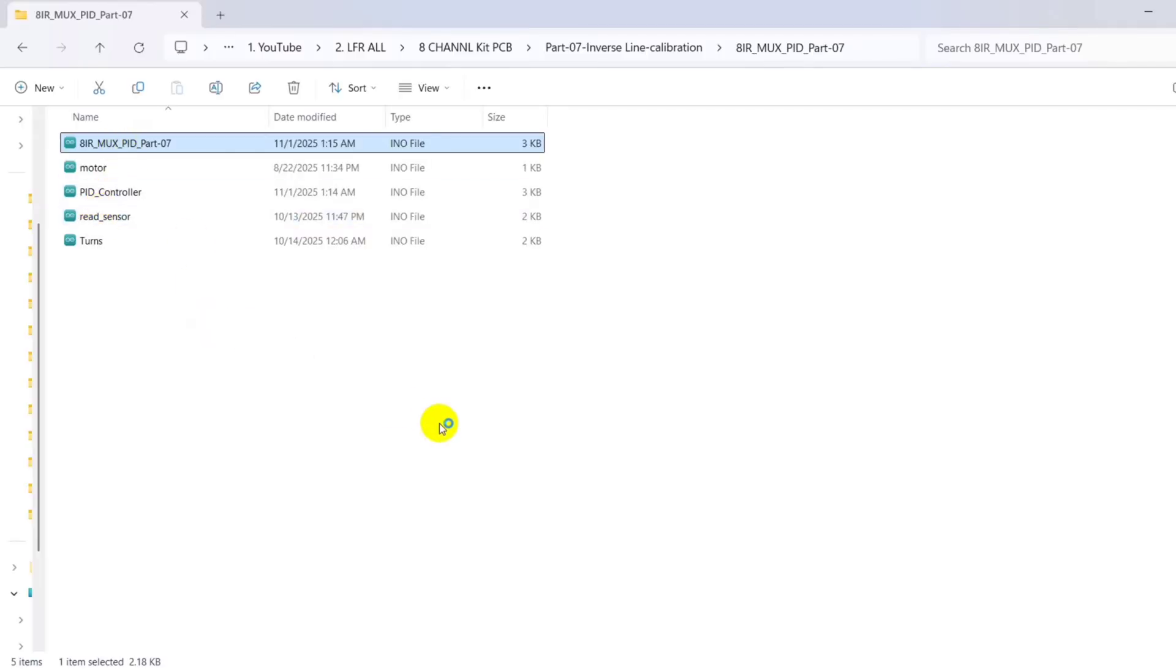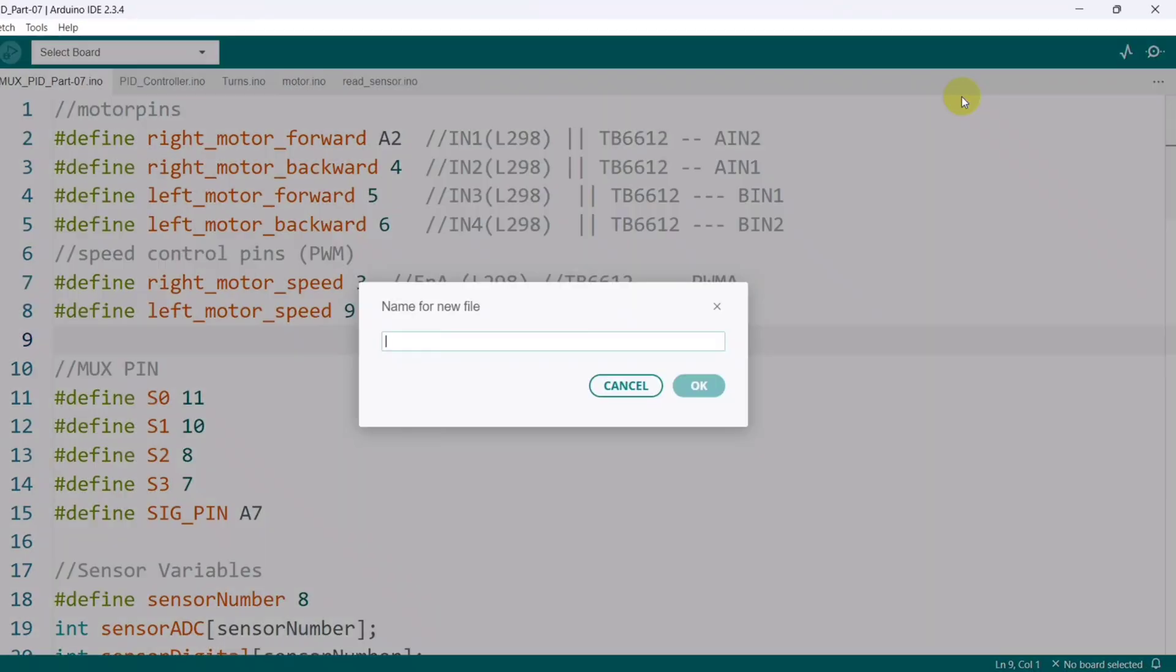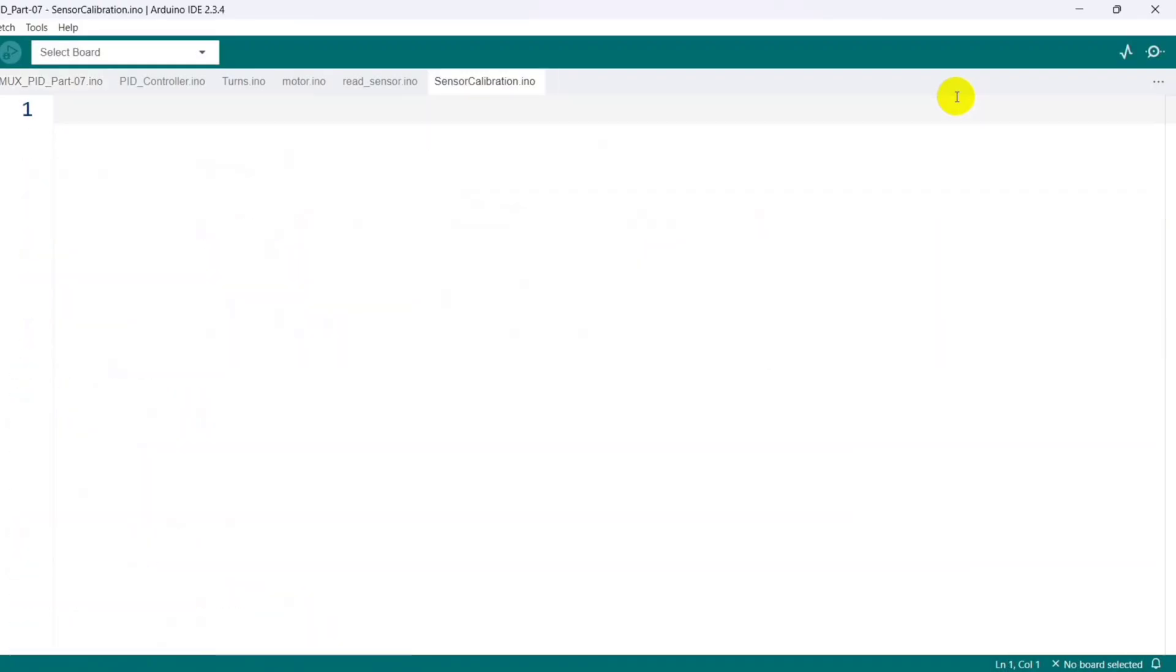Now, let's move to the coding part to implement the auto-calibration routine. I'm opening the code from the previous part and continuing from where I left off. First, I am creating a new tab for the sensor calibration code. In this tab, I'm writing a function called calibrate sensors.